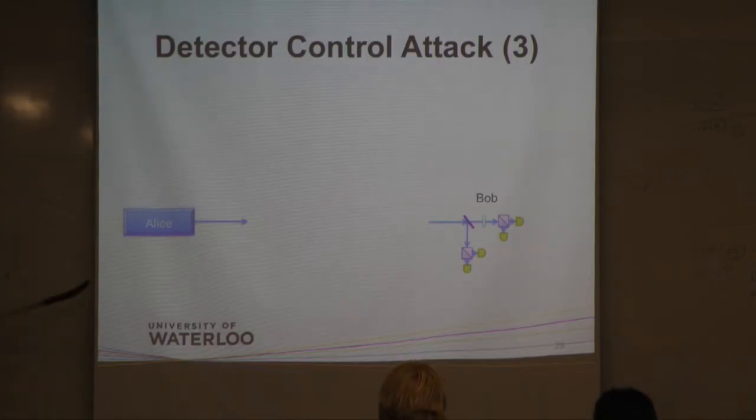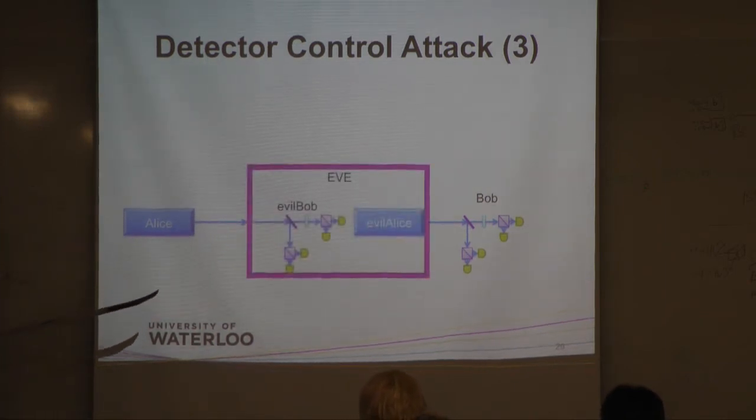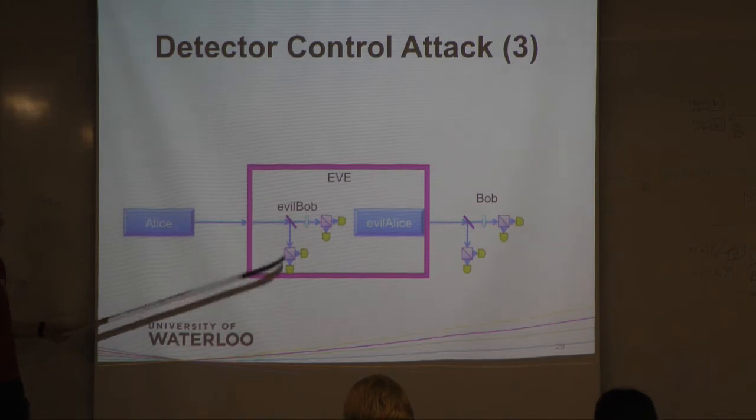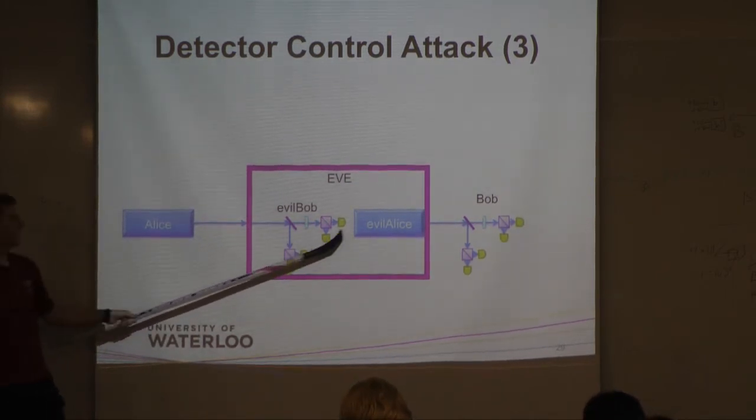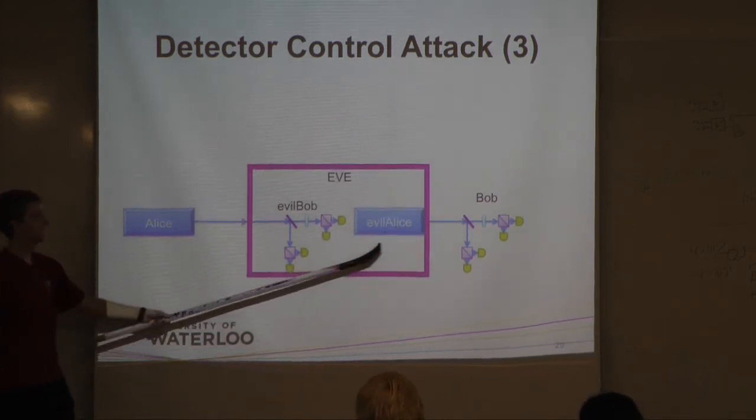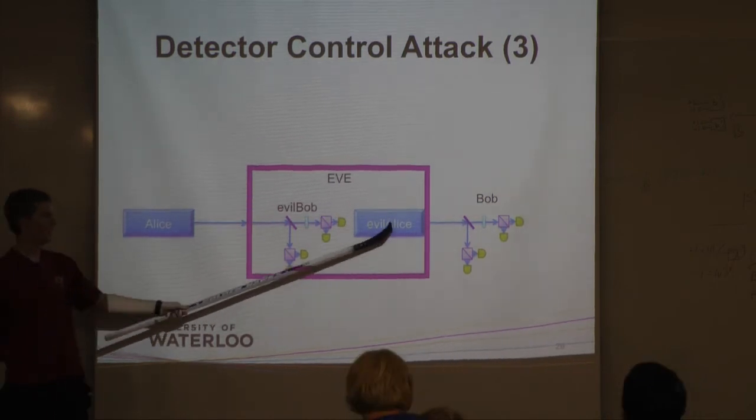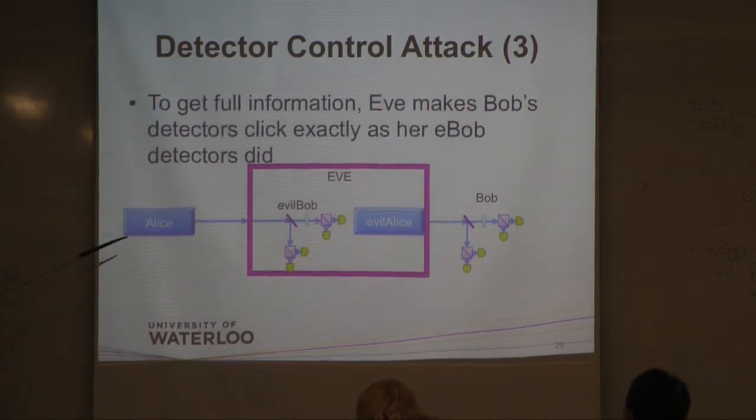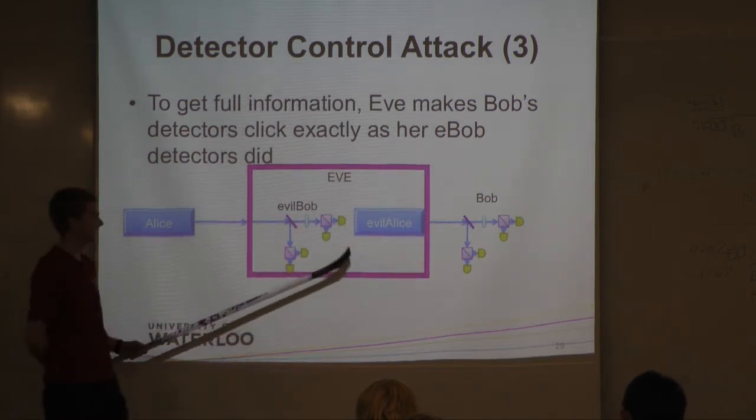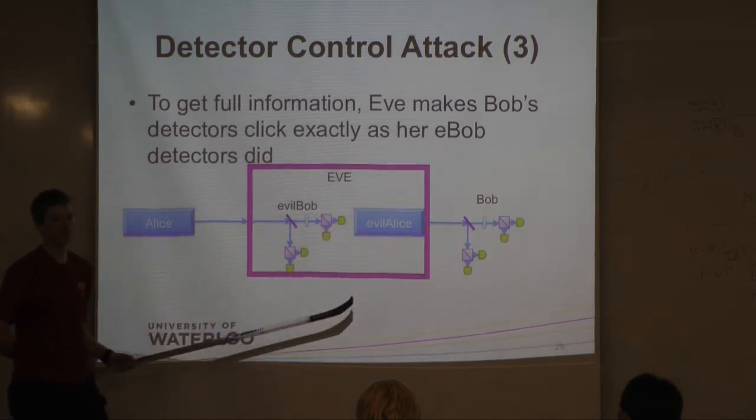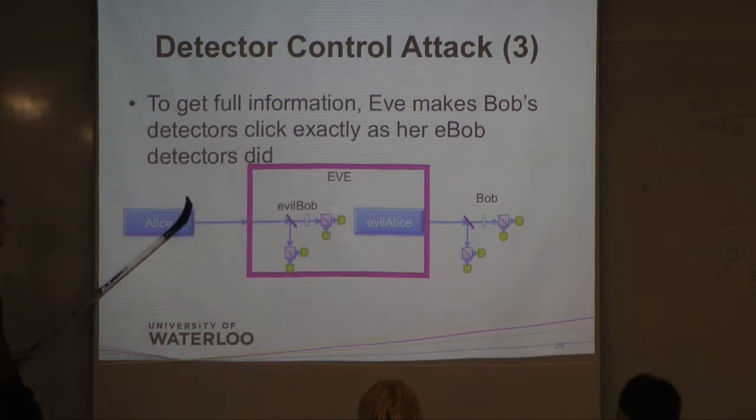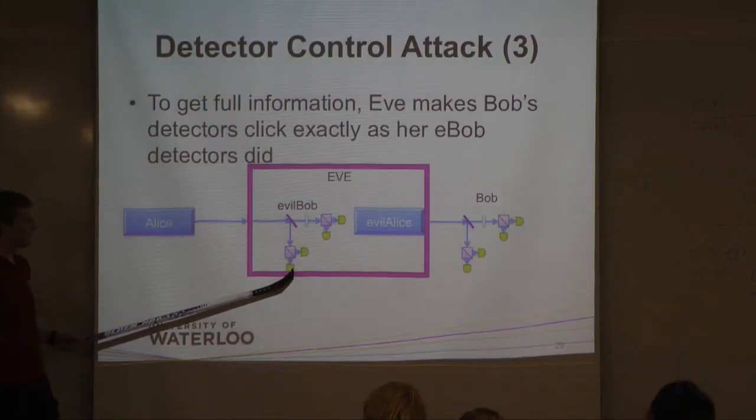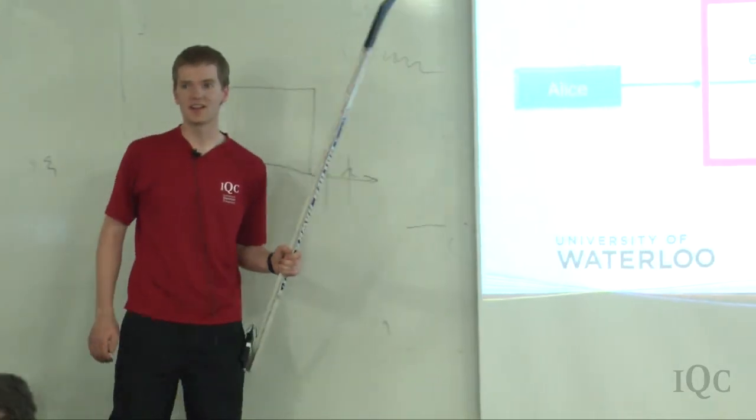So what does Eve do in this attack? Well, we have Alice and Bob here. And of course, Eve's going to go somewhere in the middle. So what she does is makes an evil version of Bob. So she copies Bob exactly and does the same measurements he does. So eventually, she'll get a click somewhere. Let's say she gets a click here. She gets an H click. Then she'll use an evil version of Alice to prepare the same state she got. So if she gets an H click here, she'll prepare an H. But she's not preparing a single photon this time. She has to prepare that really bright photon state to control Bob's detectors. So Eve's idea is to make Bob's detectors click exactly as her detectors clicked. So if Eve and Bob always have the same detections, when Bob reveals his bases to Alice and they communicate, Eve can just follow along. Eve can just follow along on error correction. Eve can just follow along on privacy amplification. So it's because Bob and Eve have exactly the same detections that Eve can just follow along and gain full information on the key.